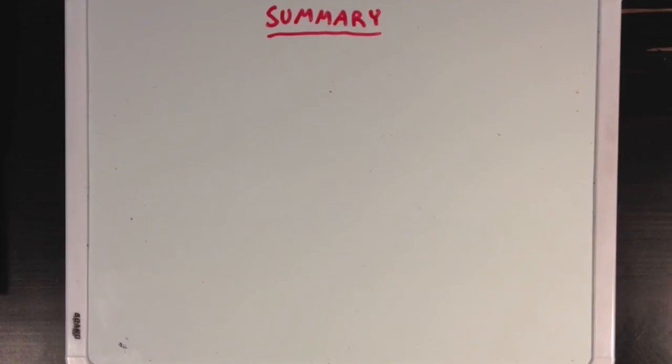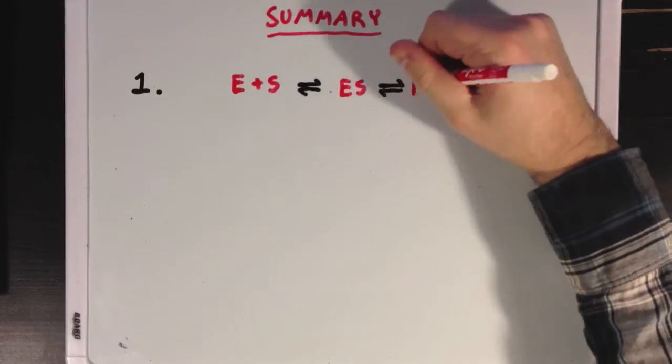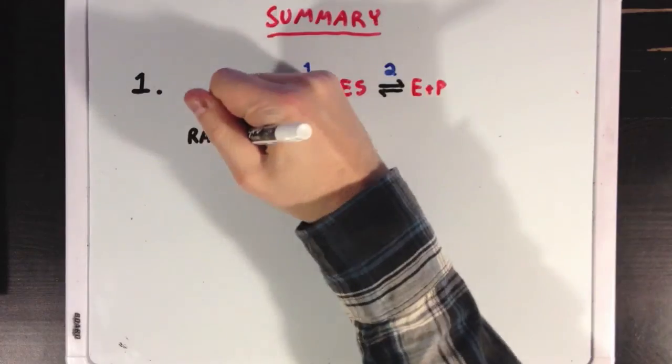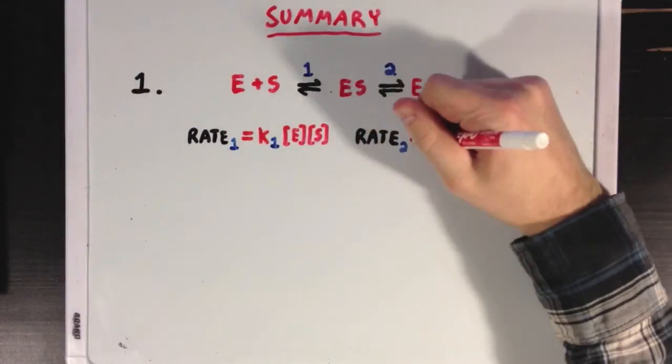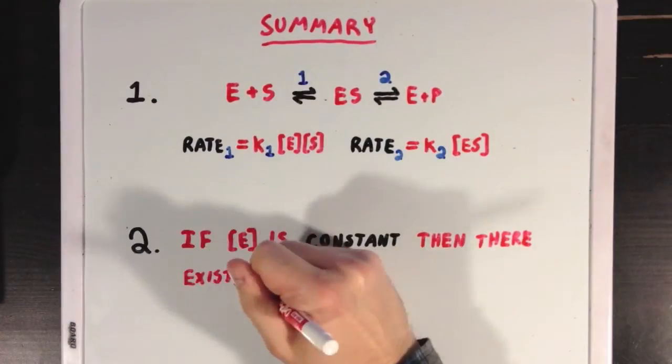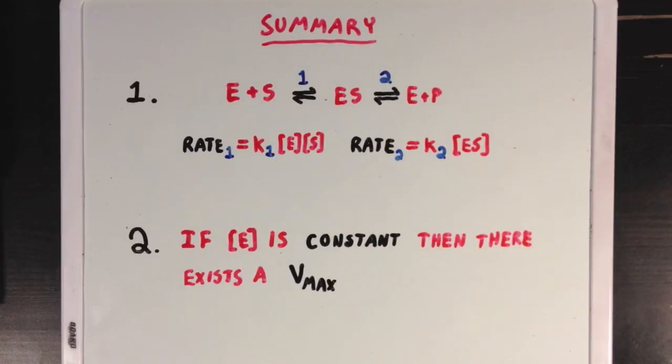So what did we learn? First, we learned that we can classify enzyme catalysis into two important steps: the enzyme binds the substrate, and then the formation of product. We talked about how each of these steps has a distinct rate. Second, we learned that if we keep the enzyme concentration constant, then there will be a maximum speed, Vmax, for that reaction.